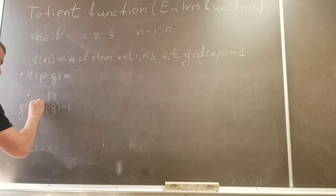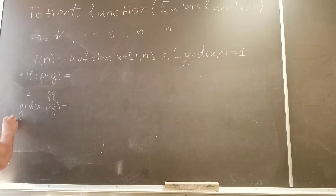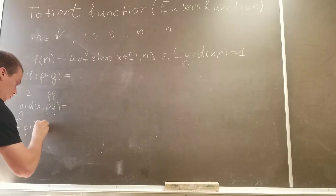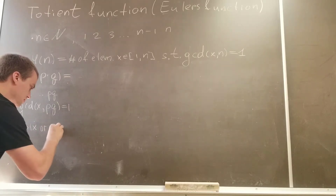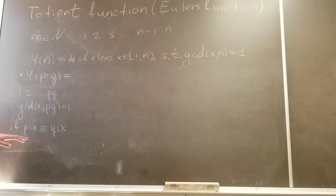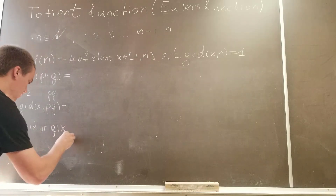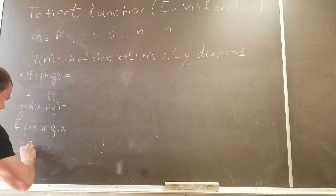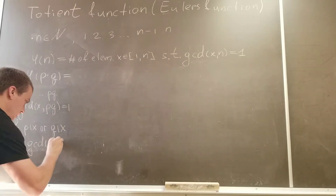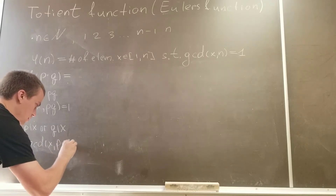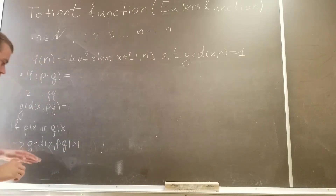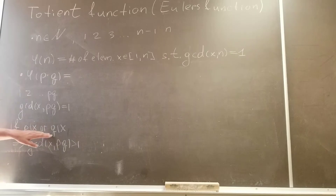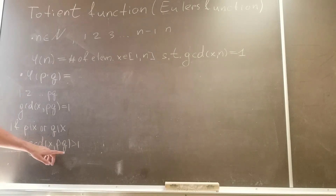If I take some element x, and if x is divisible by p or x is divisible by q, then my gcd is going to be bigger than 1. So gcd of x and p times q is going to be bigger than 1. We are only interested in p and q because p and q are the only non-trivial factors of p times q.